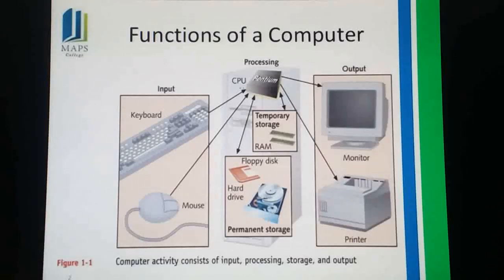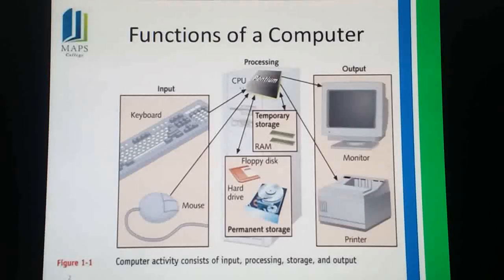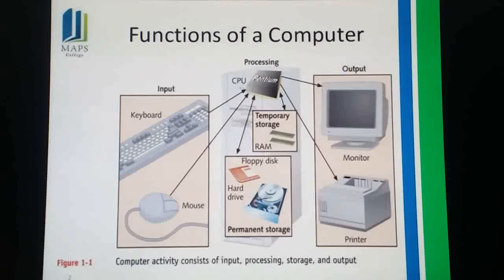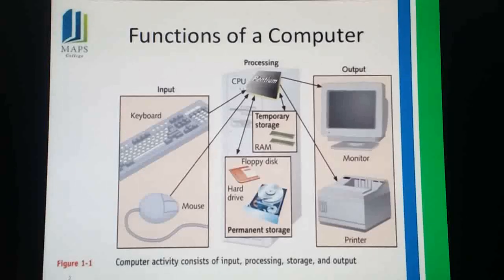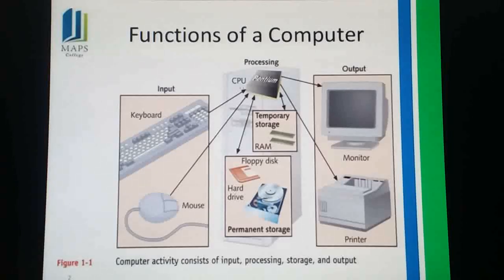The input devices include keyboard and mouse, through which we can input data. It will then be processed by the CPU. Some hardware parts are there — like motherboard, SMPS, RAM that is random access memory, and ROM that is read only memory. RAM is temporary storage memory, and hard disk and floppy disk are called permanent storage devices. After processing, we need to see the results, so the output devices like monitor and printer allow us to see the output.